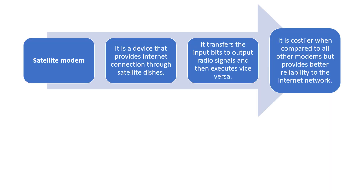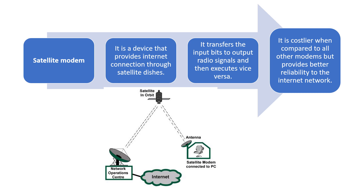The last type is the satellite modem. It is a device that provides an internet connection through satellite dishes. It transfers input bits to output radio signals and vice versa. It is costlier when compared to all other modems but provides better reliability and connectivity to the internet. The diagram shows how the internet is accessed through the satellite modem, which is connected to the PC through satellites.